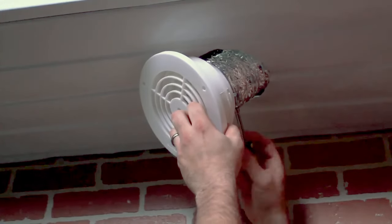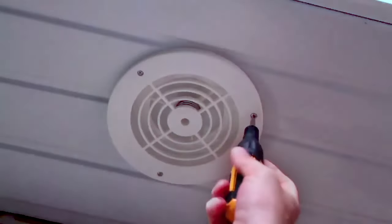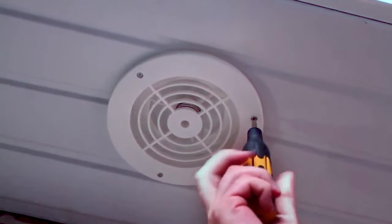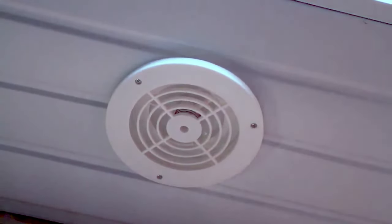Push the duct and soffit vent into the opening and ensure the face is flush against the soffit panel. Mark and pre-drill pilot holes, then fasten the soffit exhaust vent to the soffit panel using the screws provided.